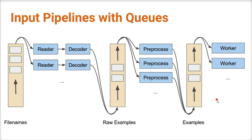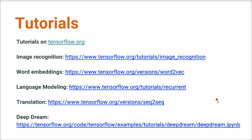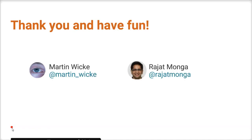Everything I have said today is kind of a taste. If you want to know more, we have loads of tutorials on our website, TensorFlow.org — you should go there and do them. There are tutorials, how-tos, and API documentation. I'd like to call out a couple: if you're interested in image recognition, the easiest way to start is the image recognition tutorial, which starts from a pre-trained checkpoint so you can see the power of image recognition. There are also tutorials on word embeddings, language modeling, a language generator, translation, and if you're into art, Deep Dream makes wonderful pictures. Thank you very much, and I think we have some time for questions.